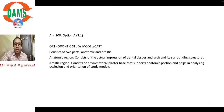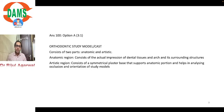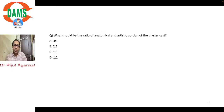The study model consists of an anatomic and artistic part. The anatomic region contains the actual impression of the dental tissue, arch and surrounding structures. The artistic region consists of a symmetrical plaster base that supports the anatomic portion and helps in analyzing the occlusion orientation of the study model.